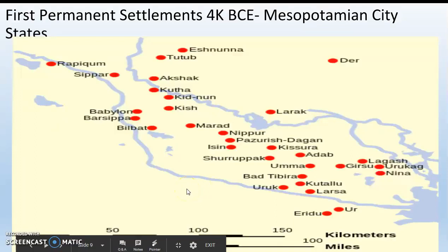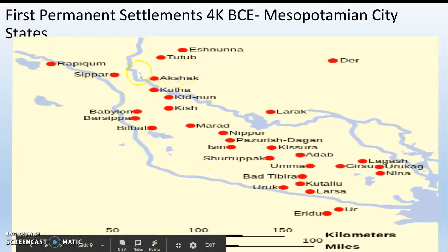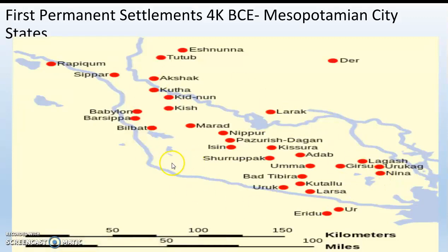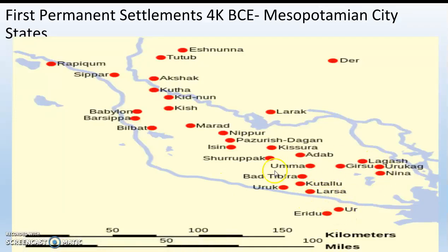This map shows a lot of the city-states in Mesopotamia — names like Dur, Tudub, and Akshak. Notice they're all along the two rivers and pretty close to each other. All of these people are farming; these are permanent cities. Each dot is a separate city-state and a separate country, but they're all Mesopotamian — basically the same people.